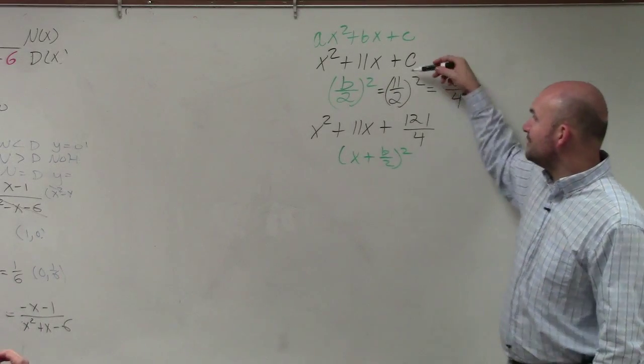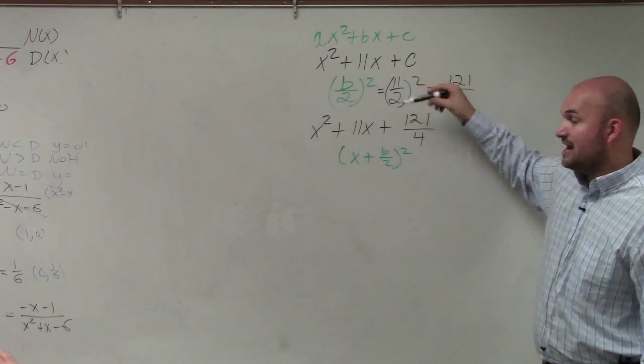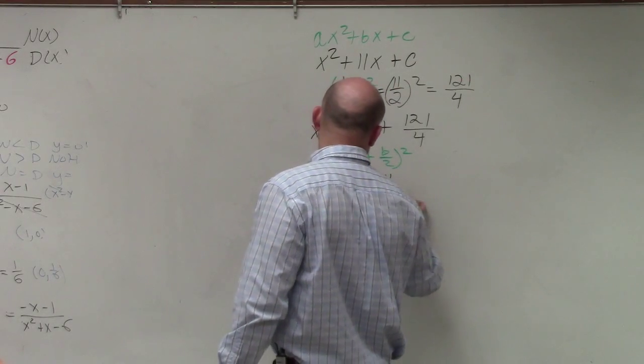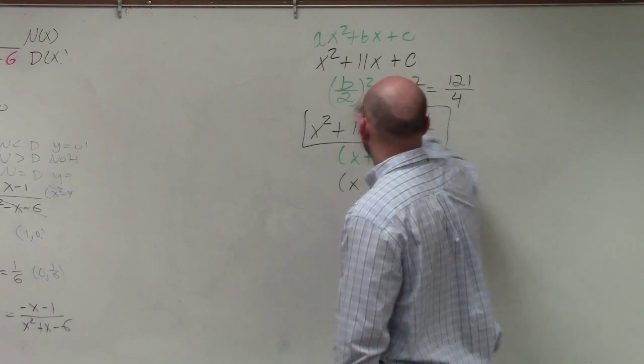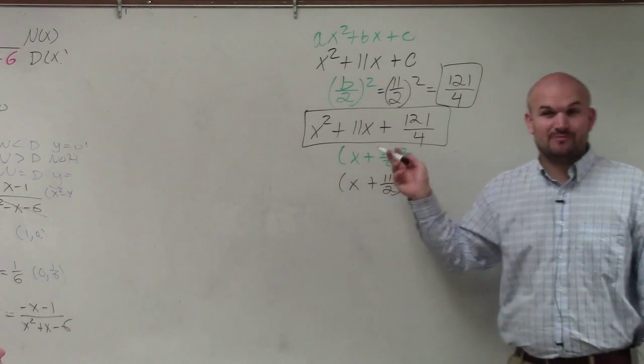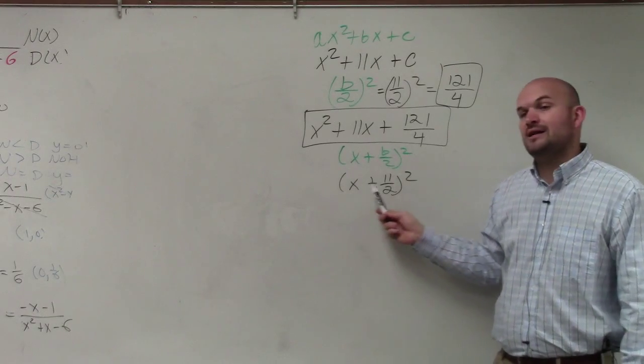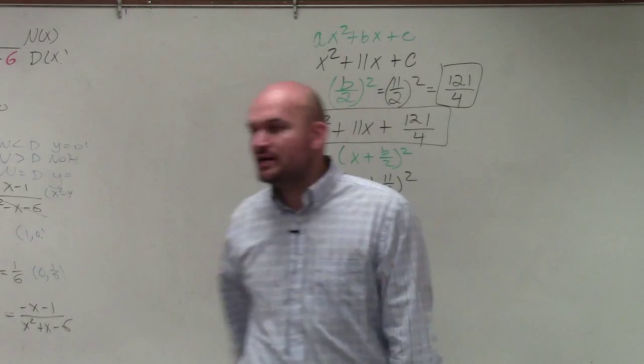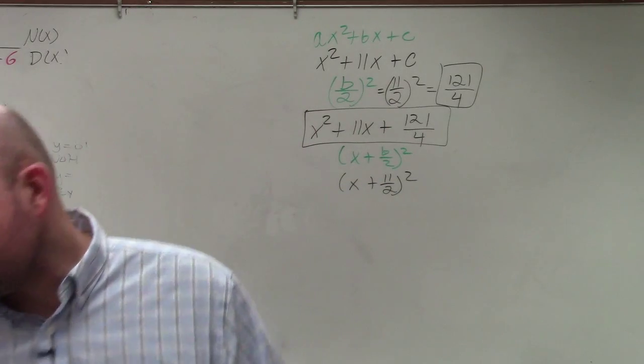So what was my b divided by 2? 11 halves. So when I come around and check your homework, I expect to at least see the value c and it written as a perfect square trinomial. You'll make me really happy if you write it as a binomial squared. Make sure you complete that, not only for that problem, but for the rest of them.